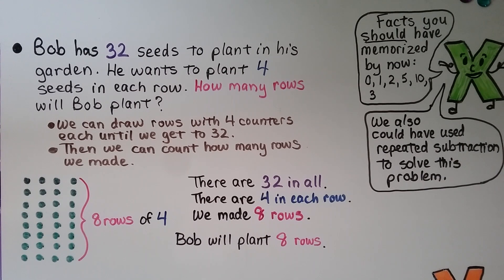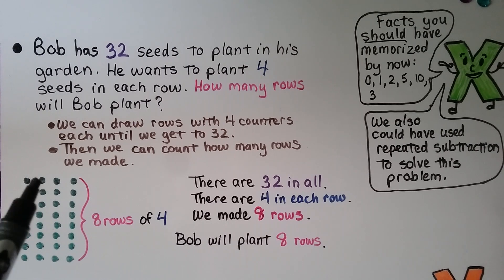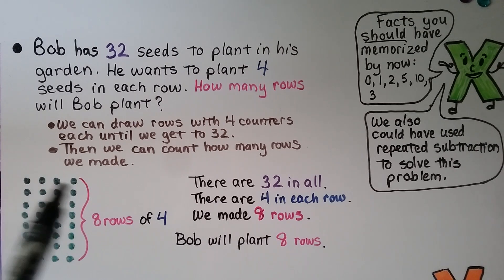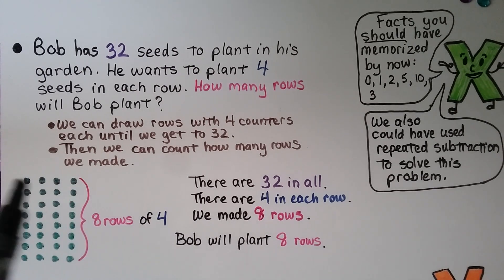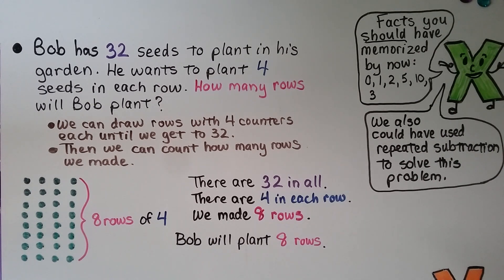Bob has 32 seeds to plant in his garden. He wants to plant 4 seeds in each row. How many rows will Bob plant? We can draw rows with 4 counters each until we get to 32, then count how many rows we made.